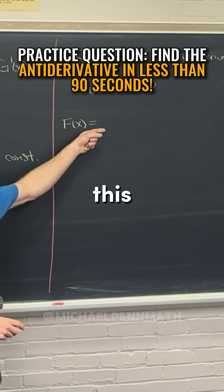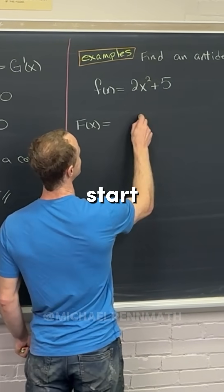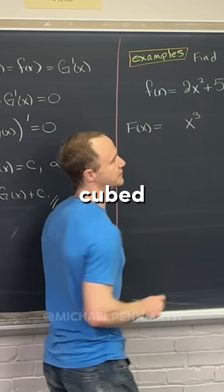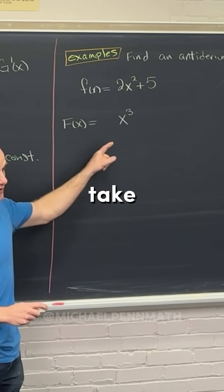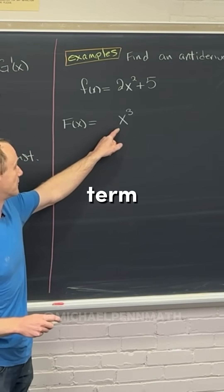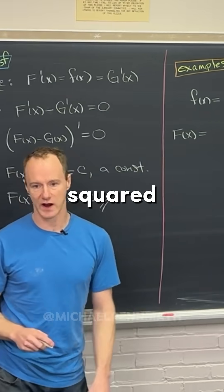So that means that this object had to start with an x cubed term, right? Because if we were to take the derivative of an x cubed term, it would become an x squared term.